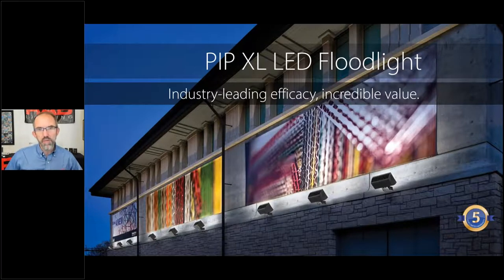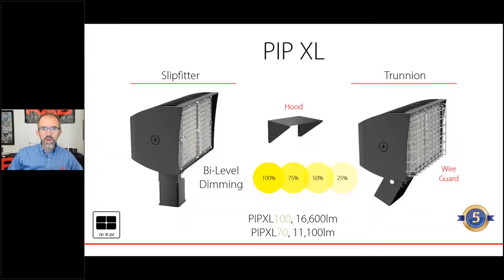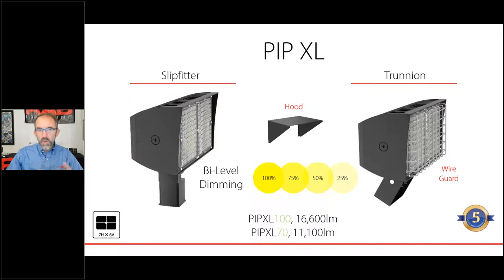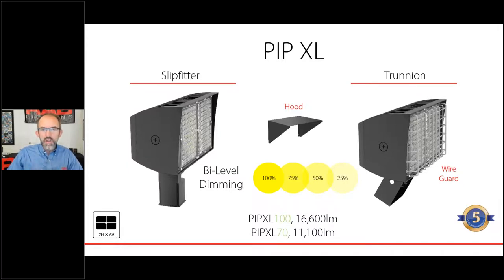The PIP XL is a product RAB has had for a very long time. There are three package sizes; let's focus on the large one. Even though it falls into the economy family just like the X34 and X17, the PIP XL expands options considerably: 120–277V and 480V, three CCTs, a 7-pin receptacle option, button photocells, twist lock photocells, bi-level dimming, LightCloud-enabled factory-installed fixtures, and hoods — giving you 215 different versions to choose from.